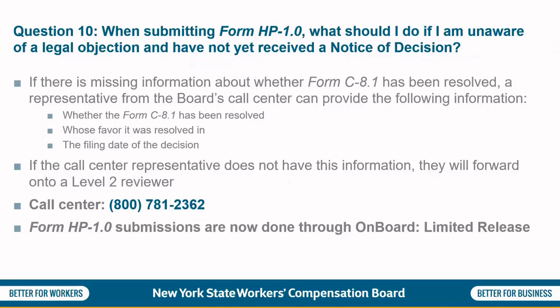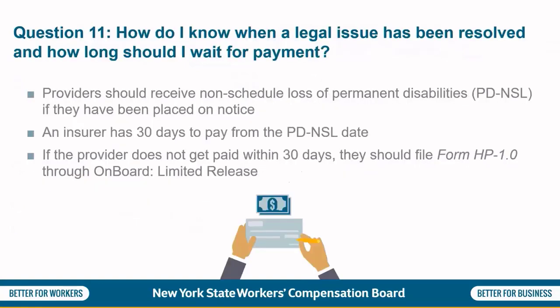Question 10: When submitting Form HP1, what should I do if I am unaware of a legal objection and have not yet received a notice of decision? If there is missing information about whether Form C-8.1 has been resolved, providers can contact the Board's call center at 800-781-2362 to speak with a representative who can provide whether the Form C-8.1 has been resolved, whose favor it was resolved in, and the filing date of the decision. If the call center representative does not have this information, they will forward your call to a Level 2 reviewer. Please note all Form HP1 submissions are now done through onboard limited release.